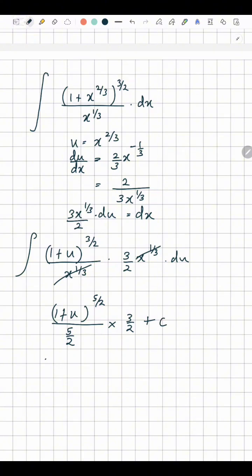So your answer is going to be 3 over 5 times 1 plus x to the power 2 over 3, to the power of 5 over 2, plus c. This is your final answer.